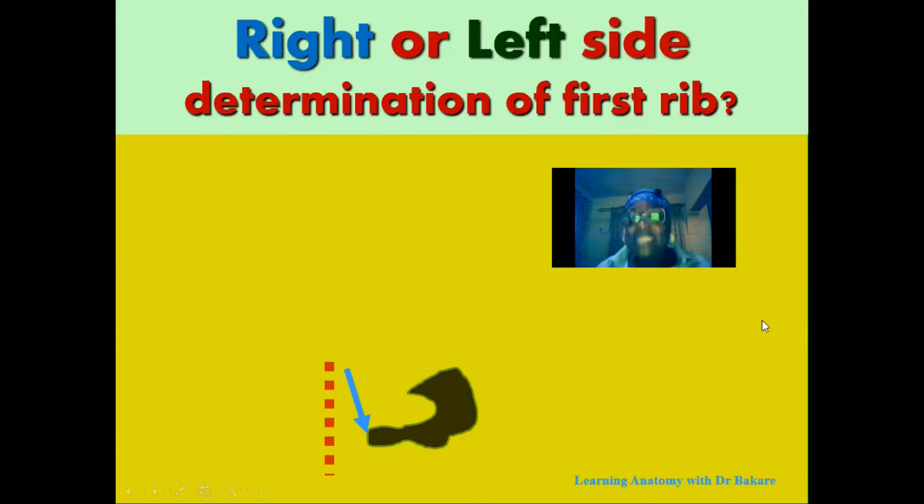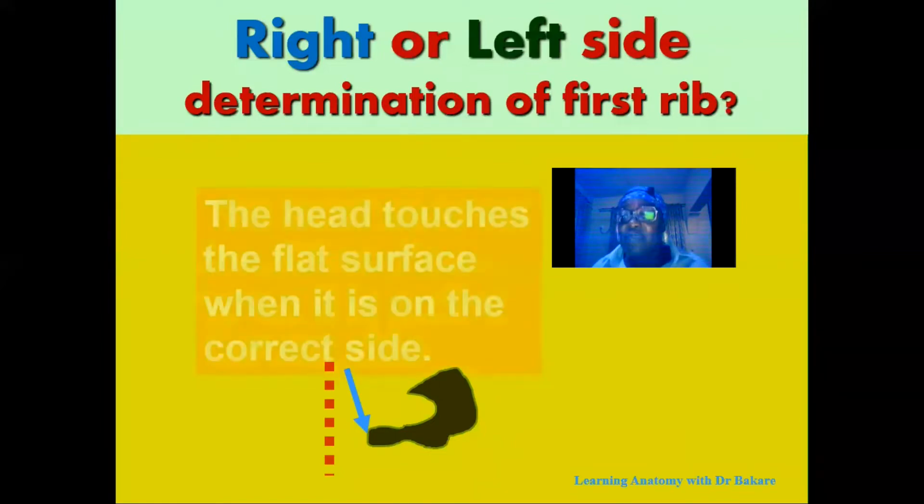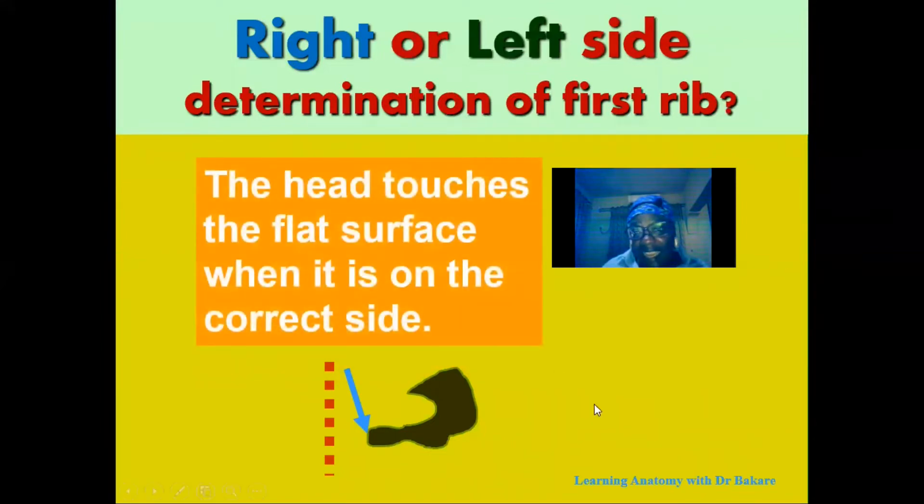Welcome! So how do you determine whether the first rib is of the right side or the left side? This is so easy. The quick way to do this is to place it on a flat surface. If the head of the rib touches the flat surface, then it is of the correct side.